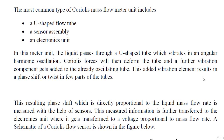Coriolis forces deform the tube and a further vibration component gets added to the already oscillating tube. This added vibration element results in a phase shift in parts of the tube. The flow increases the vibration and the phase shift effect changes the frequency. This resulting phase shift, which is directly proportional to the liquid mass flow rate, is measured with the help of a sensor. This measured information is transferred to the electronic unit where it gets transformed to a voltage proportional to the mass flow rate.